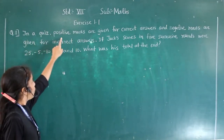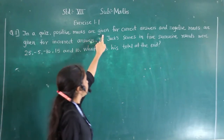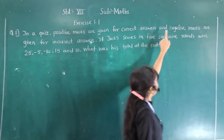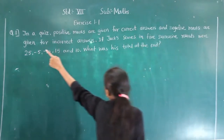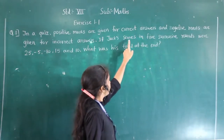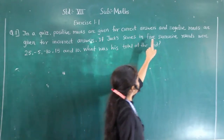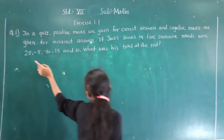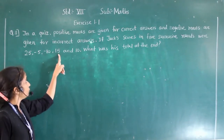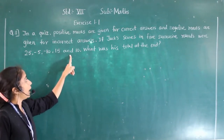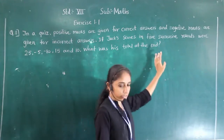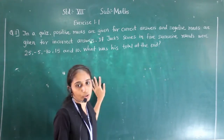In this case, positive marks are given for correct answers and negative marks are given for incorrect answers. It checks both in 5 successive rounds: 25, minus 5, minus 10, 15, and 10. What was the total at the end?